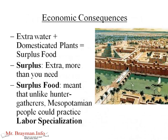These are economic consequences — put this in the E part of your SPICE graphic organizer. Extra water plus domesticated plants equals surplus food. Surplus means extra, more than you need. This is the big underlying fact of civilization: you need surplus food. Because unlike hunter-gatherers, Mesopotamians could practice labor specialization — some people were farmers, some people were traders, some people were priests, some people were soldiers. That's the big idea of labor specialization.